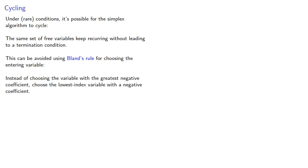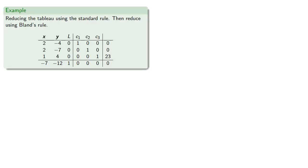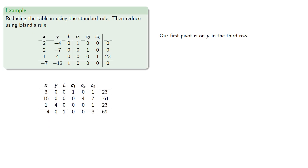Instead of choosing the variable with the greatest negative coefficient, choose the lowest index variable with the negative coefficient. For example, if we have the tableau, we can reduce it using the standard rule, and then using Bland's rule. So our first pivot will be y on the third row, and so we get. Then our next pivot will be x on the first row, and this gives us our solution.